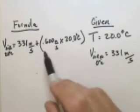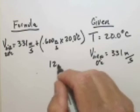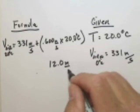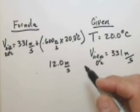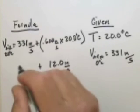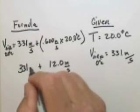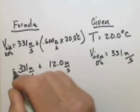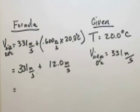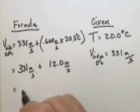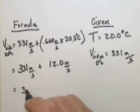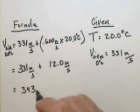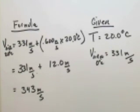So 20 times that would be 12.0 meters per second. And then we'd add that to 331. So in this particular case, 331 and 12 would give you 343 meters per second.